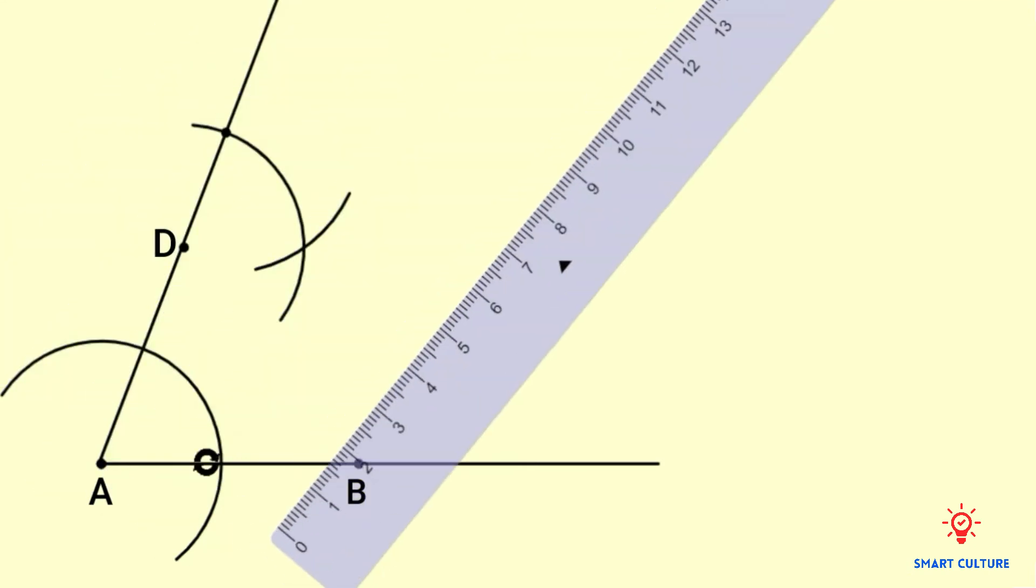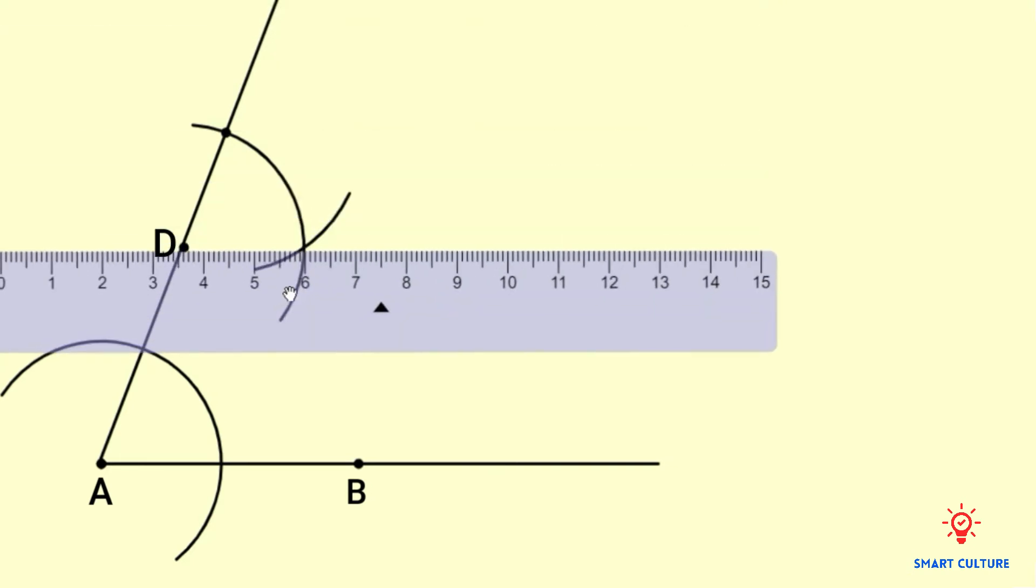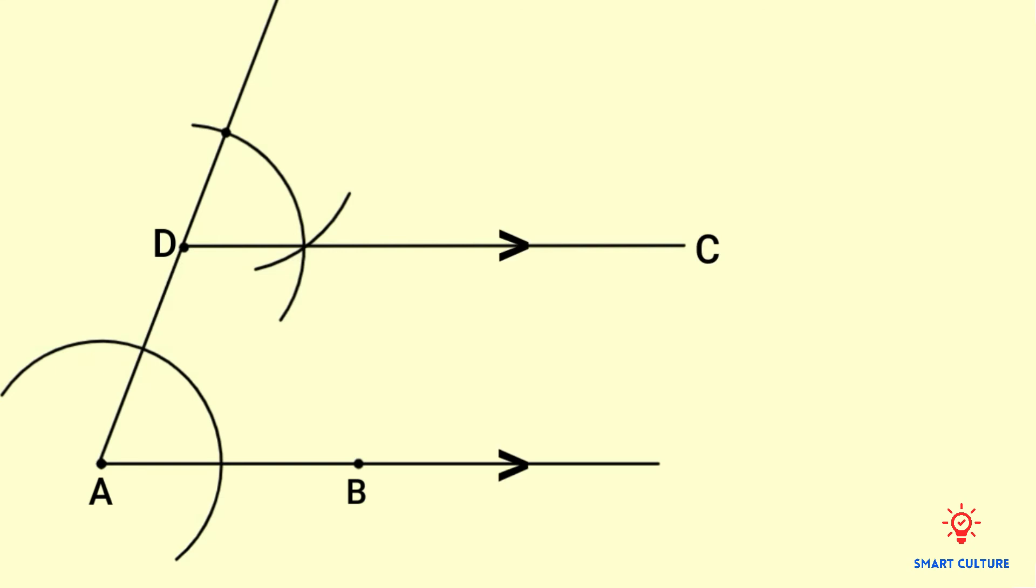Now draw a line from D through the point where the two arcs meet. DC is parallel to AB.